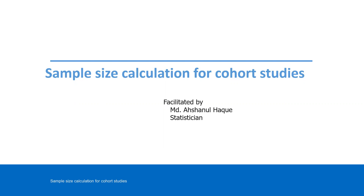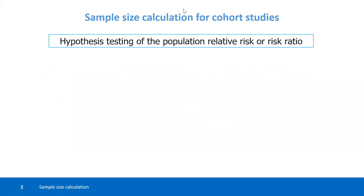First, we have to discuss some background. For cohort study, we have to state a hypothesis. Generally, the effect size for cohort study is risk ratio or relative risk. That means we have to take a hypothesis based on relative risk or risk ratio.